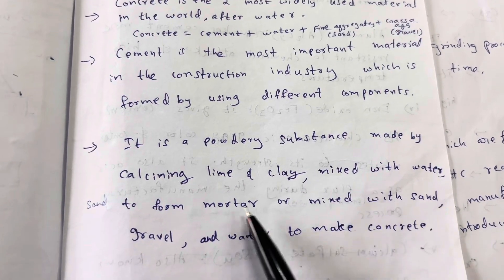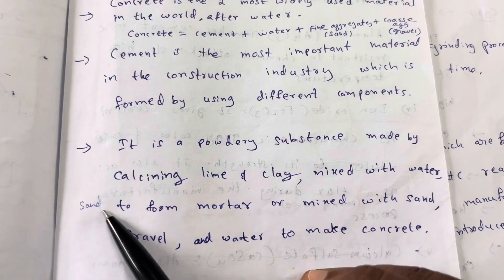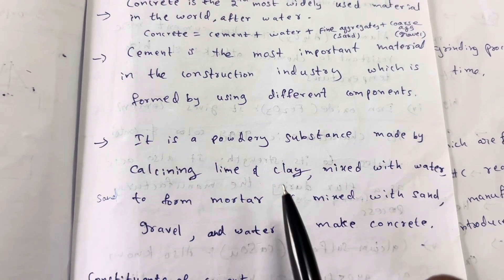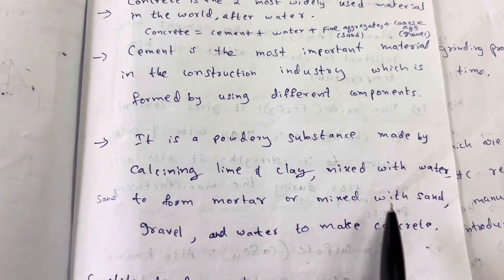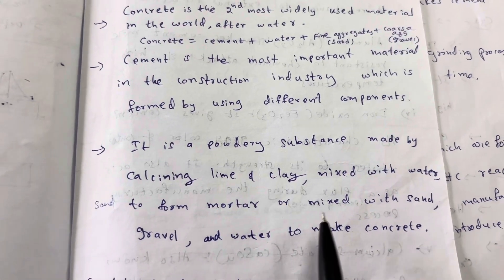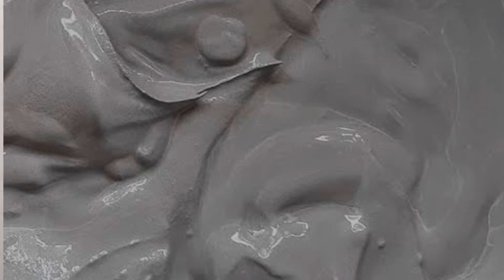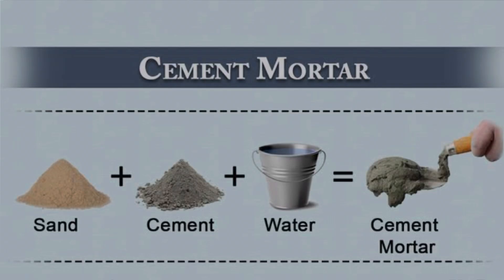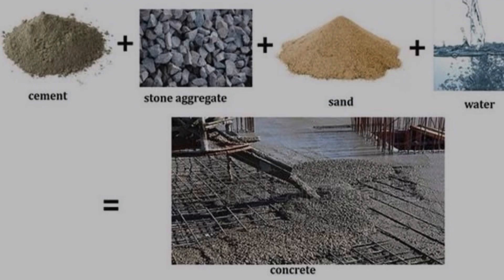When cement is mixed with water and sand, it forms mortar. When cement is mixed with sand, gravel and water, it forms concrete. Cement plus water is cement paste. Cement plus water plus sand is mortar. Cement plus water plus fine aggregate plus coarse aggregate is concrete.